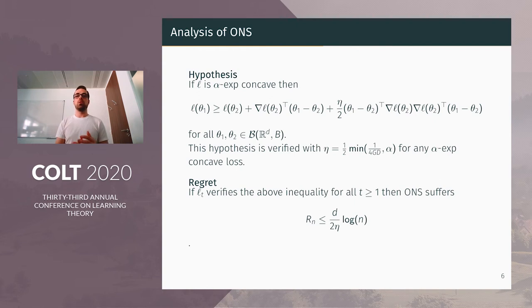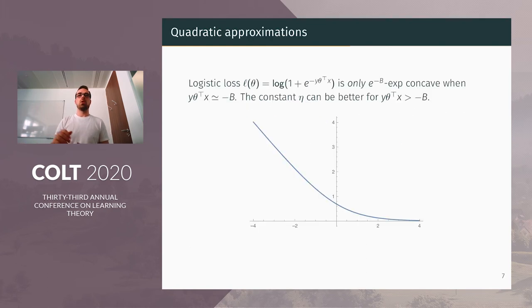If this hypothesis is verified, we can show that the online Newton step algorithm suffers regret bounded by log N, but with a multiplicative constant which is proportional to 1 over η. And in the case of the logistic loss, 1 over η will be of the order of exponential B.